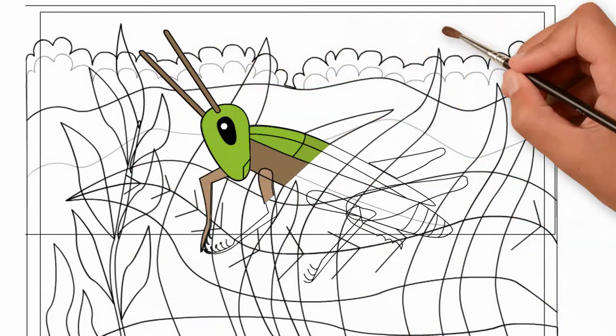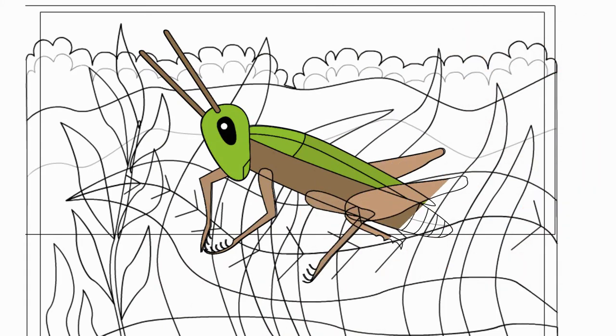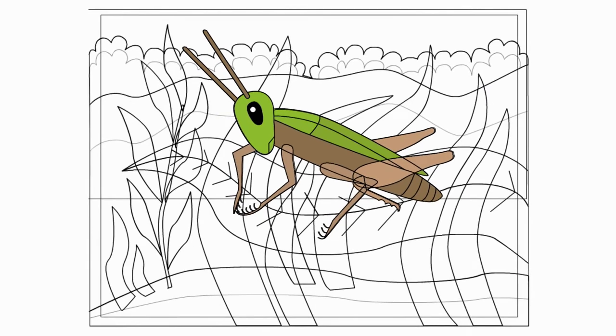And now let's draw a landscape. Our grasshopper jumps in the field. Here we draw the grass and the field in which our hero lives.